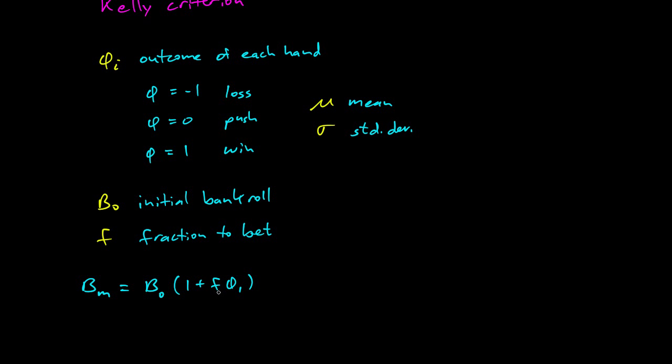So if f is 0, if we didn't bet anything, this is just 1, we just keep our bankroll the same. If f is 1, we bet everything. Then depending on what φ is here, we either go to 0 times our bankroll, we go bankrupt immediately, or this goes to 2, in which case we double our entire bankroll if we bet everything.